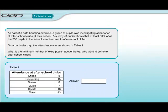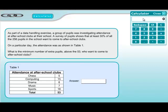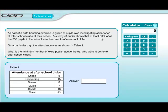Question 14. This time they're asking: a survey of pupils says at least 30% of the 256 pupils in the school want to come to after-school clubs. On a particular day attendance was shown in Table 1. What is the minimum number of extra pupils above the 53 who want to come to after-school clubs? Let's bring the calculator up straight away. The key information is 30%, so your job is to work out what is 30% of 256.